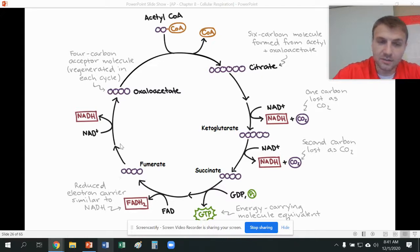This four carbon molecule is going to be changed into oxaloacetate by reducing another NAD. Now, remember what I said a couple of slides ago. This process occurs twice because we're getting two acetyl-CoA's from the prep step.